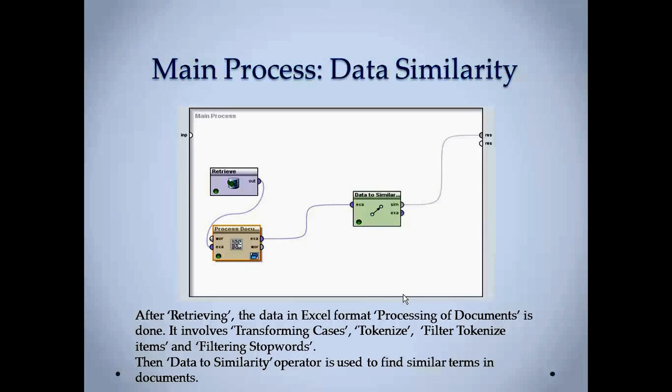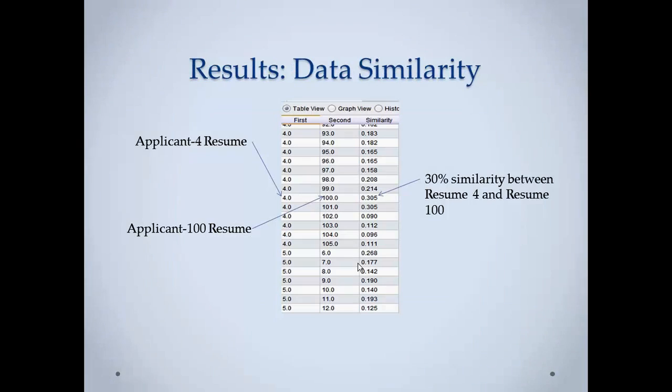The main process can be data similarity. If you want to compare the resumes, it can be also taken as plagiarism if the resume or the size or the type of resume matches very much similarity. You just have to retrieve the data, process the documents, simple processing and then apply an operator data to similarity. It basically operates to find similar terms in the documents. For example, if we see here, applicant number 4 resume is first column and applicant 100 resume is second column. The similarity between these two resumes is 30%.